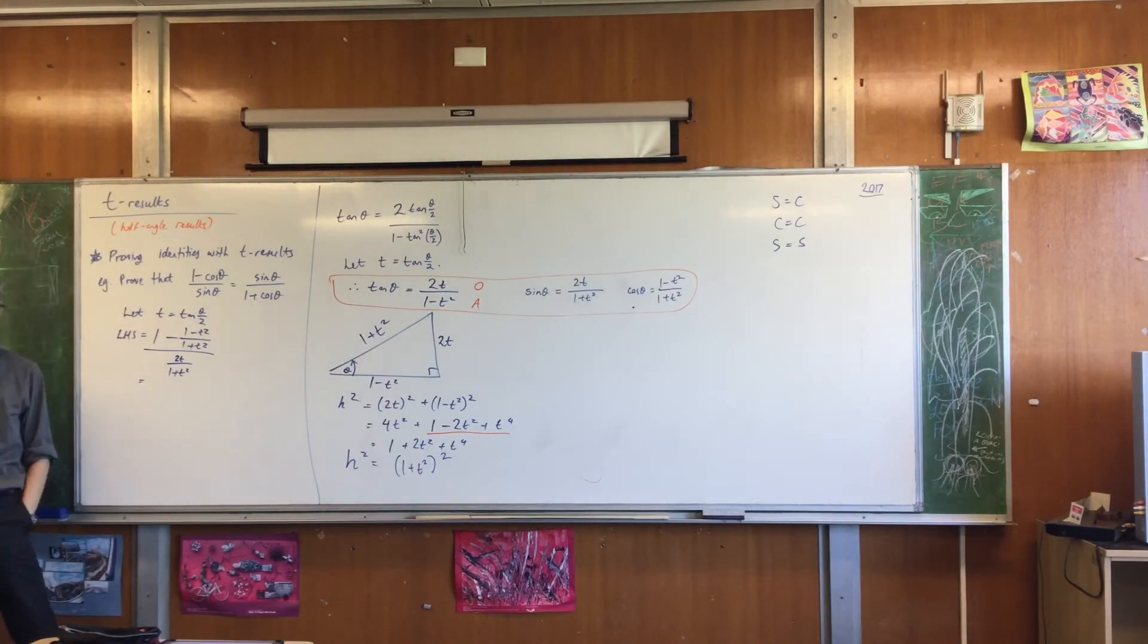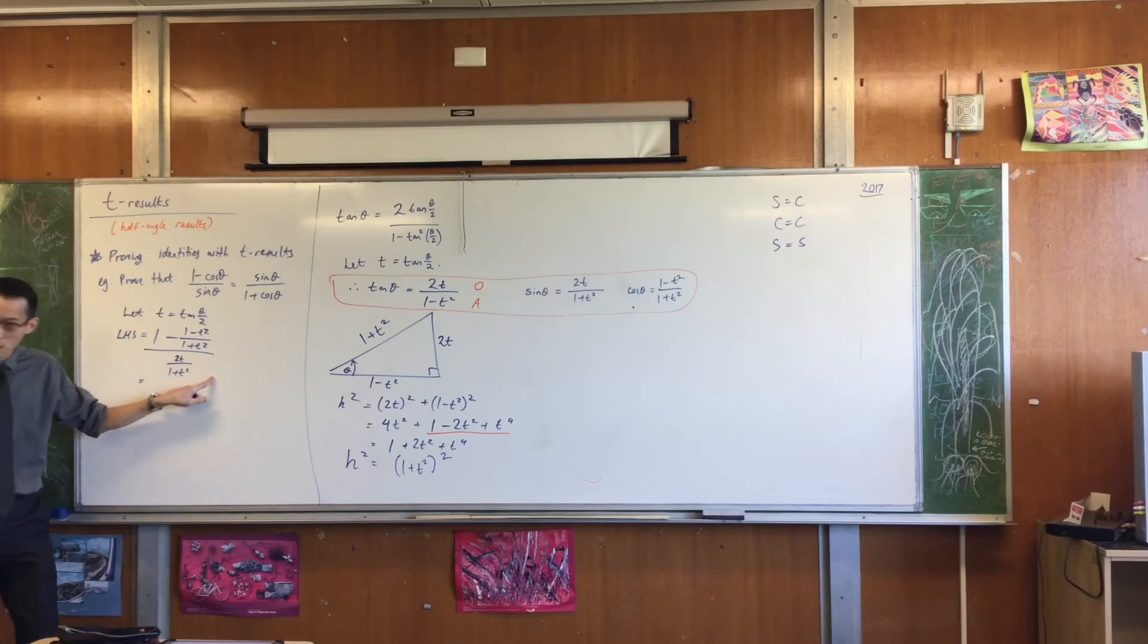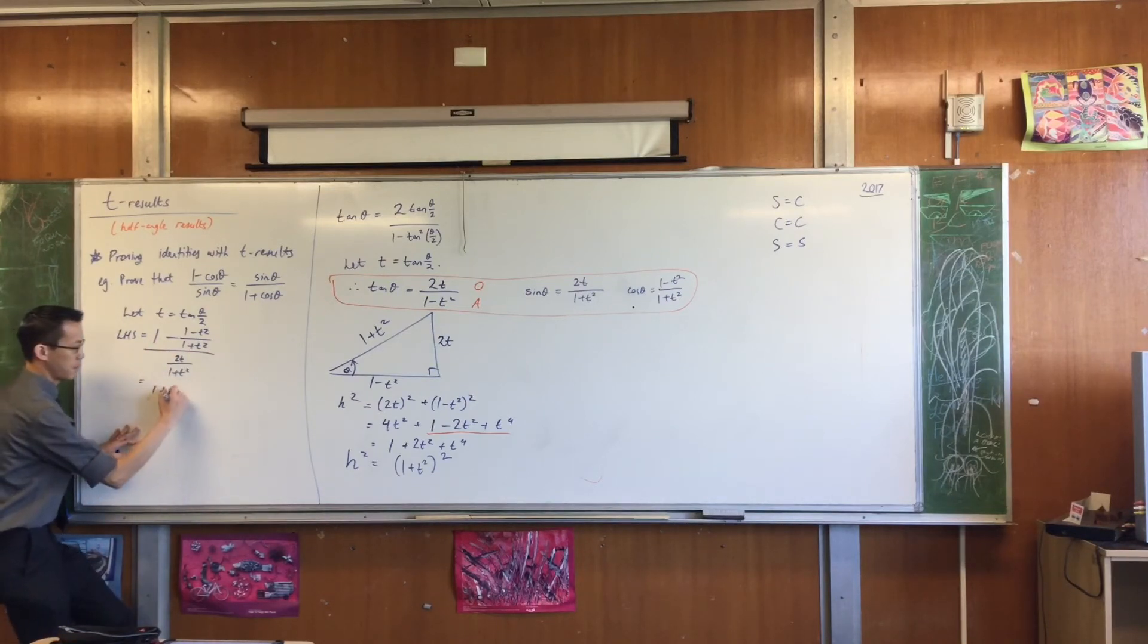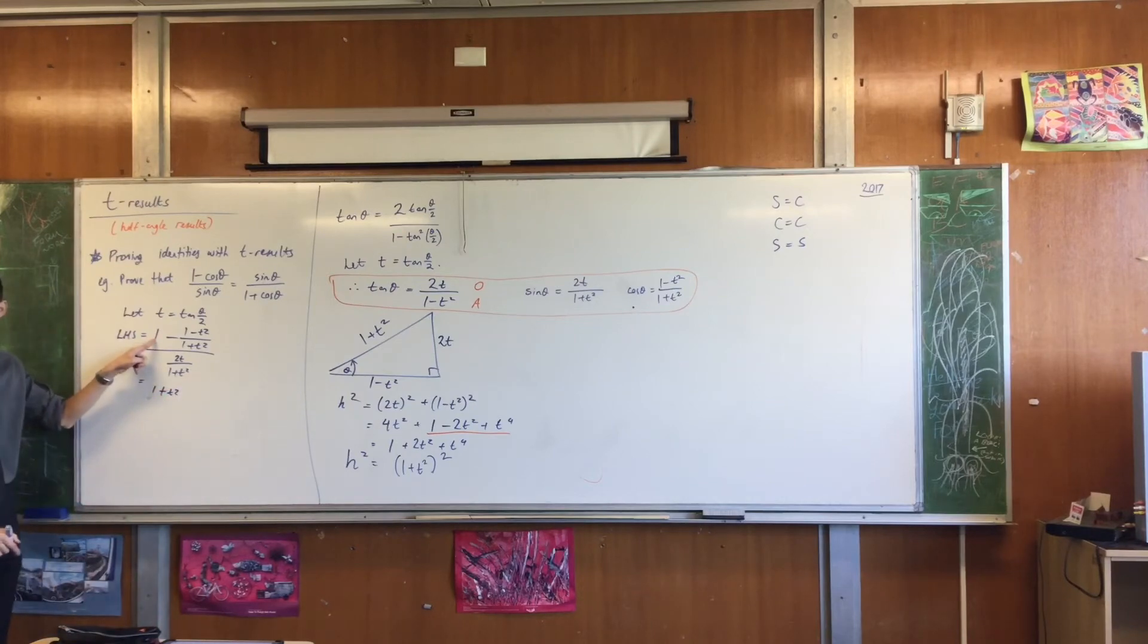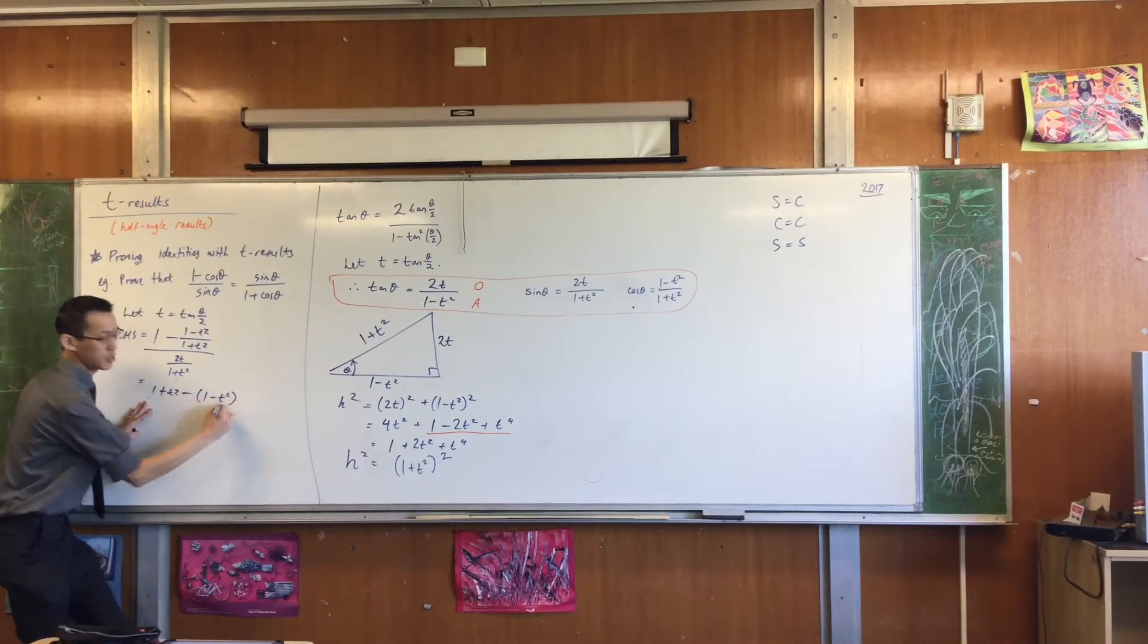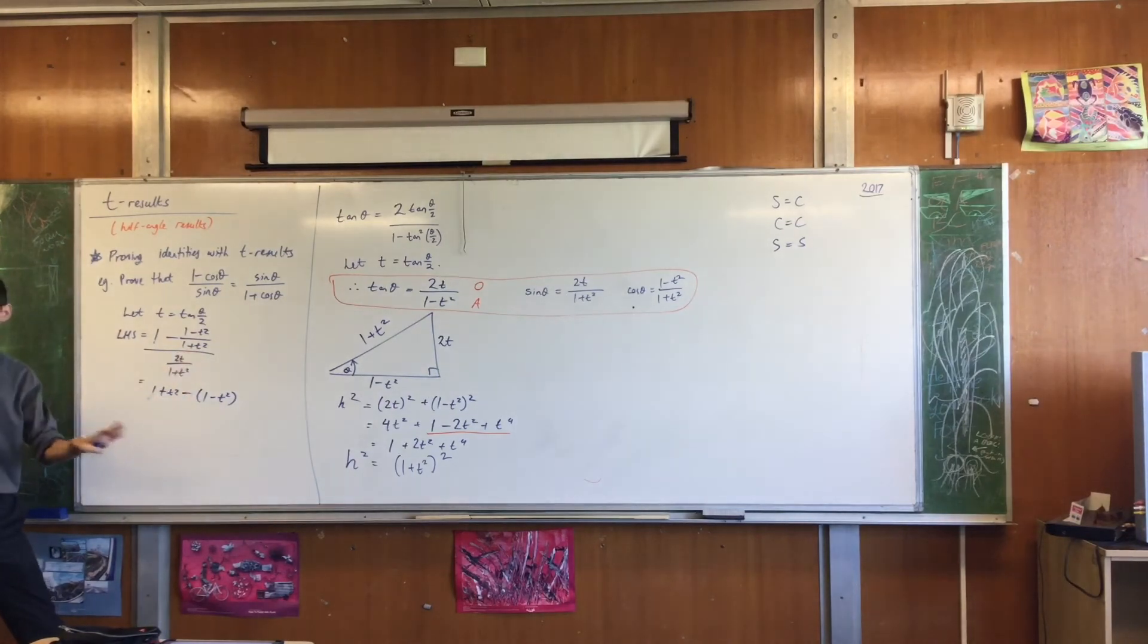Divide it by sine theta, which is 2T on 1 plus T squared. It's the same hypotenuse. Now, I'll grant you, it looks like a bit of a mess right now, but that's okay. We've had lots of practice with algebra just like this. You've got fractions on fractions. What do we usually do to fix that? Multiply through by something. What would be one thing that gets rid of all my fractions on fractions? That denominator right there. Let's multiply through by 1 plus T squared. Then I'm going to subtract one minus T squared. You see how I've gotten rid of that denominator there.